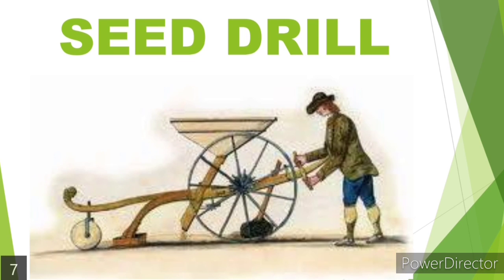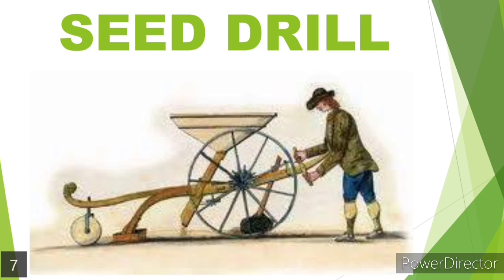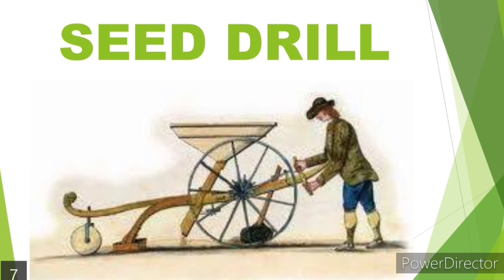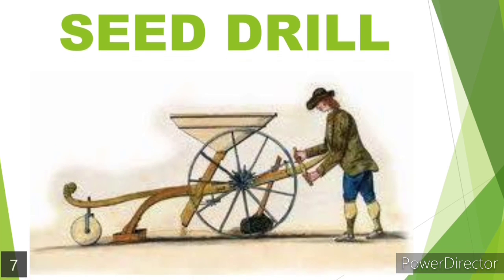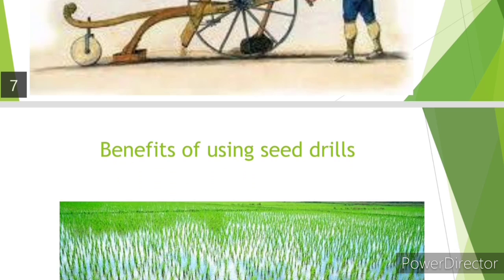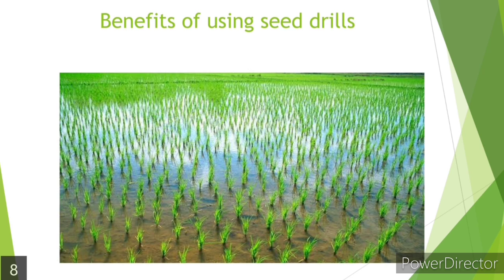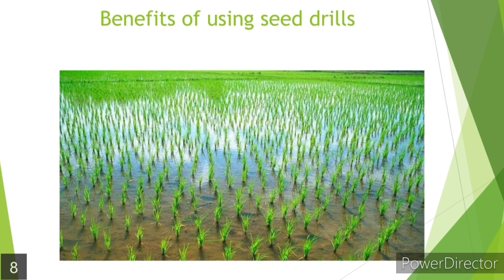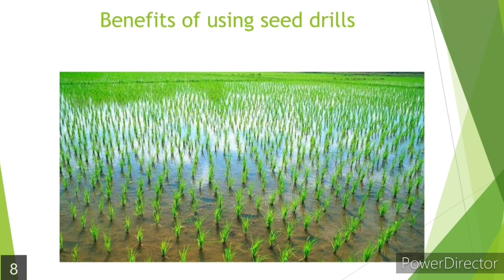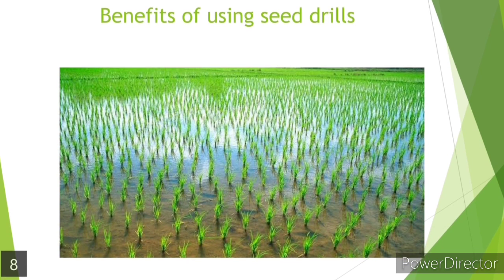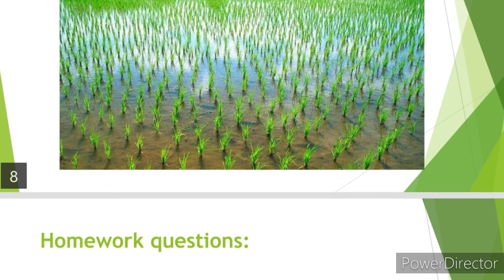A seed drill is comprised of three basic sections: one funnel-type section where the seeds are placed; a pipe attached to it through which the seeds come to the ground; and a nozzle with a metallic end that easily pierces into the ground and places the seed inside. We can see the benefit of using a seed drill — the field is so much more uniformly spread with crops because the seed drill spreads seeds uniformly inside the field.